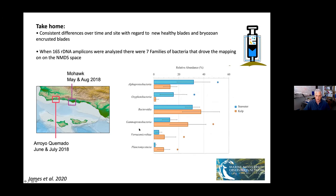The community structure is driven by changes in basically six families of bacteria found in the NMDS space, with enhanced Gammaproteobacteria, Bacteroidetes, and Planctomycetes on the kelp compared to the seawater.